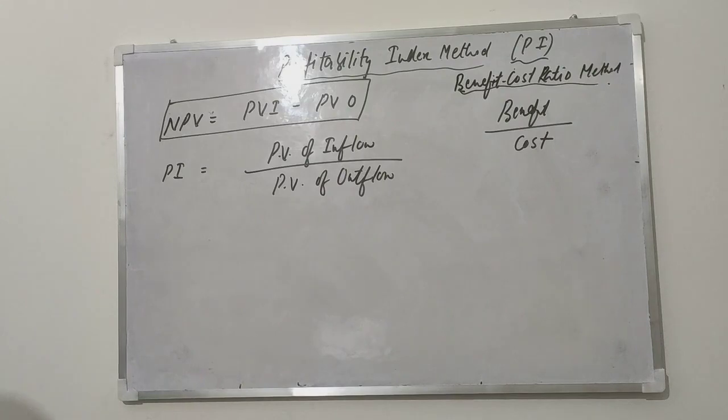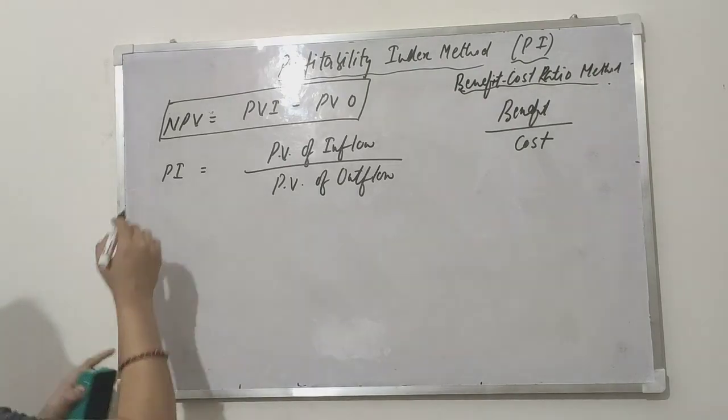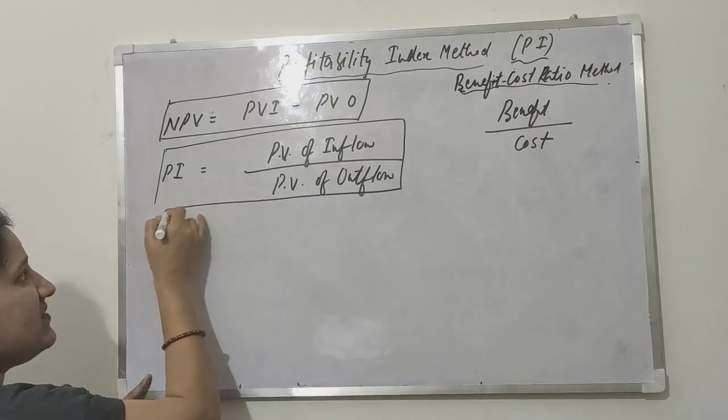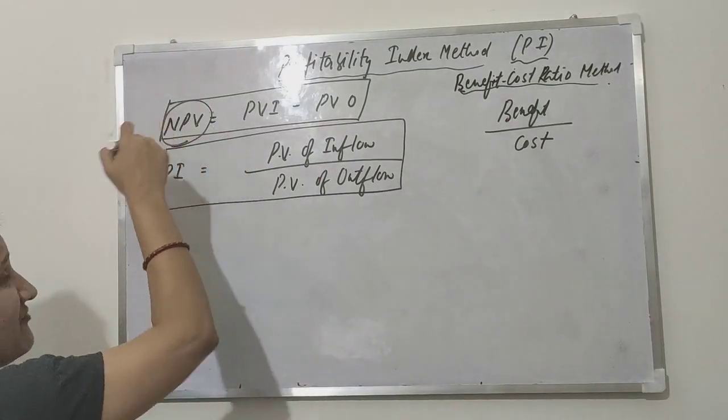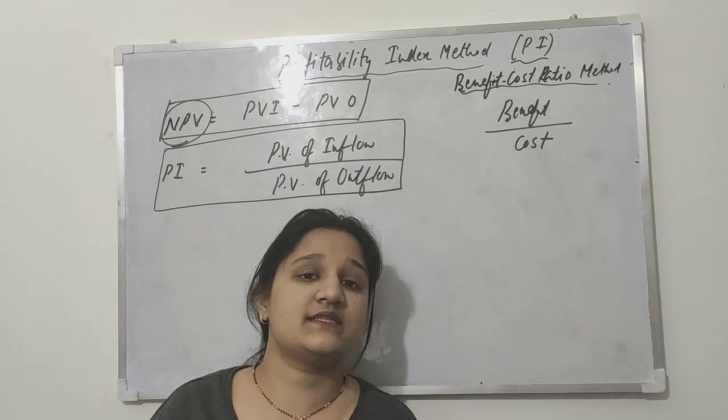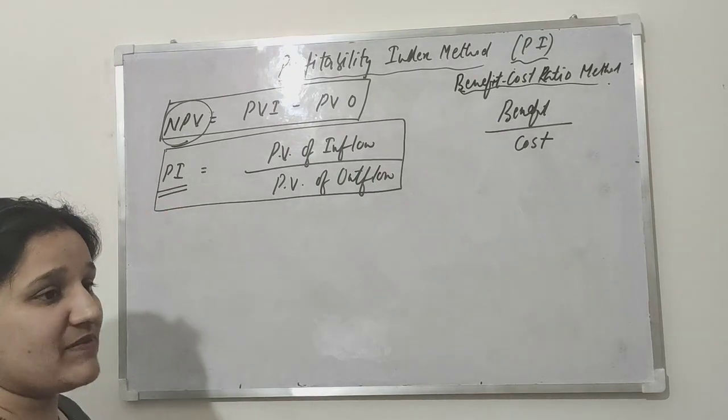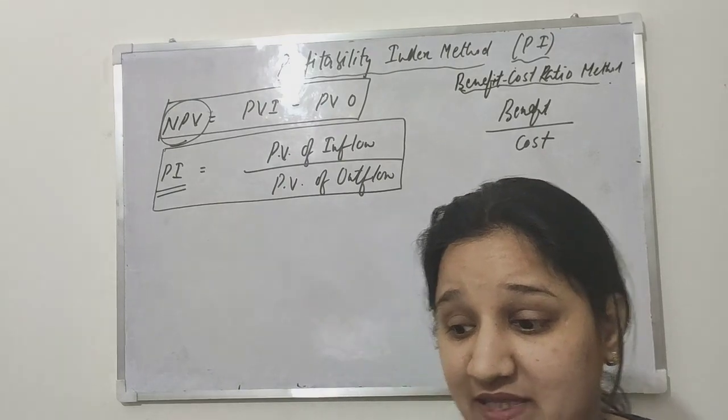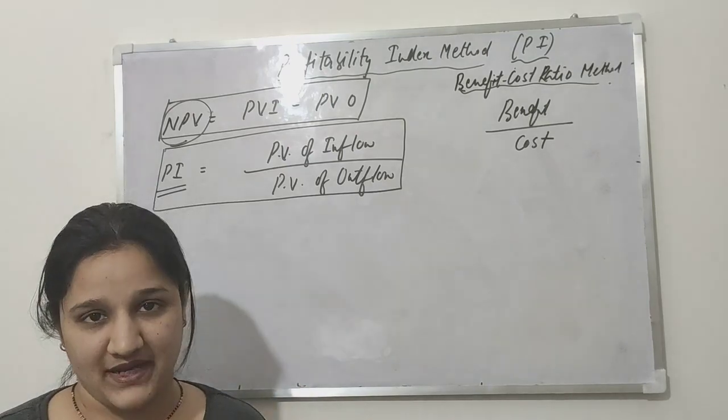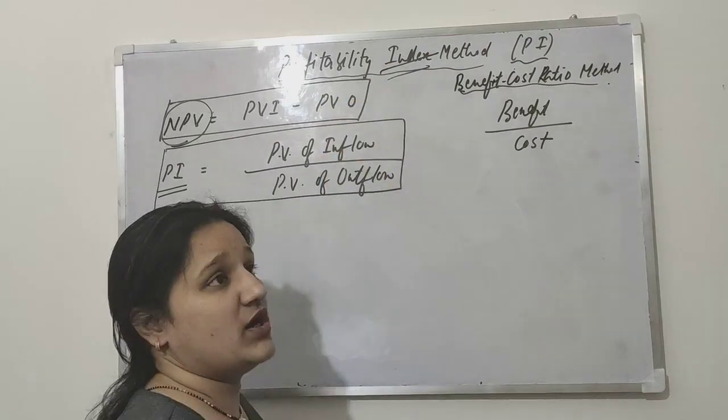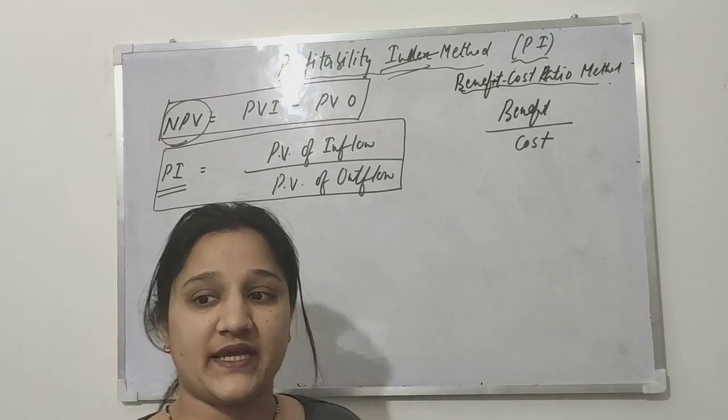Same two things we are using, but we are dividing here. In NPV we were subtracting, in this we are dividing to calculate PI. NPV is the difference between the two, and that formula will give you the value added that the project is adding to the particular company's profits. PI will let you know how much the company will earn per rupee invested.